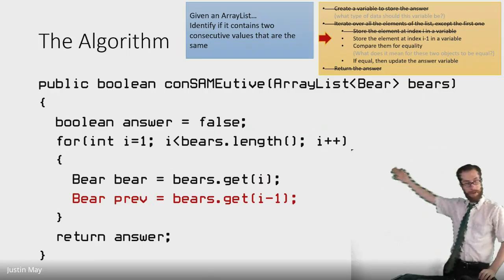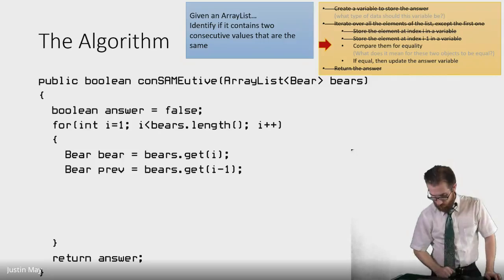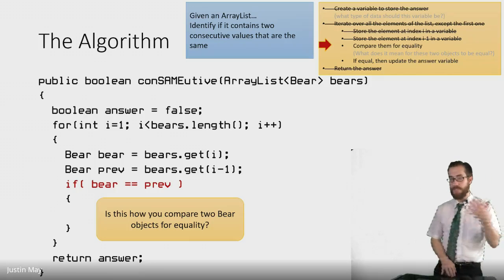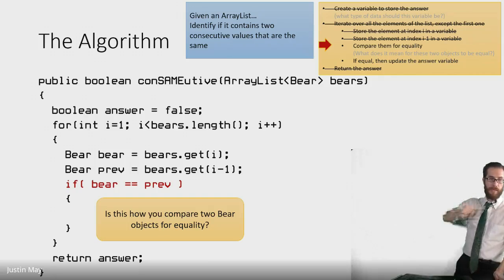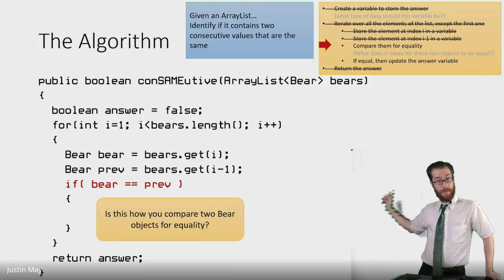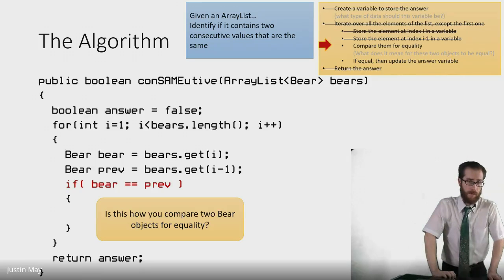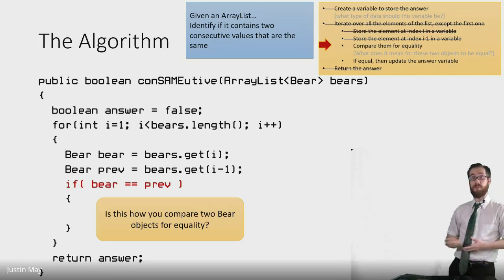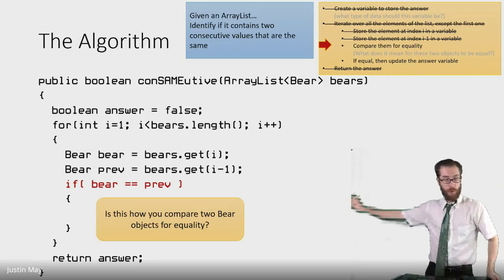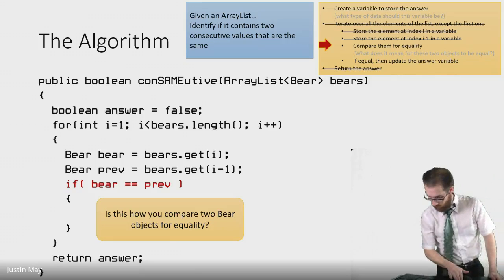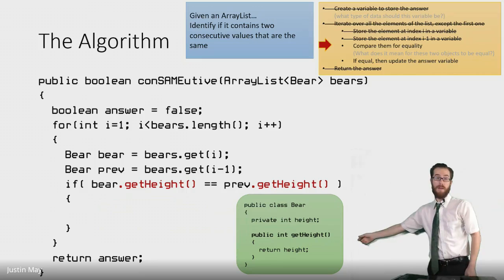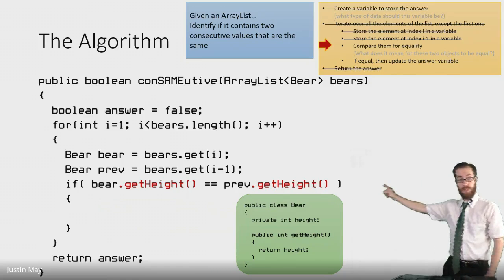Now we have two bears: 'bear' and 'prev'. The next step is to compare them for equality using an if statement — whenever you're comparing or identifying things, use an if statement. If bear equals prev... but wait, is that how we compare two bear objects for equality? If we want to know if these are two bears that have the same height — because that's what we're checking — we're not checking if they're the same bear, we're checking if they're two different bears with the same height. So we actually don't want to compare bear to prev directly.